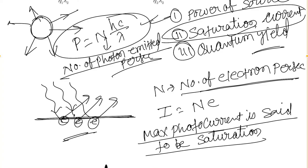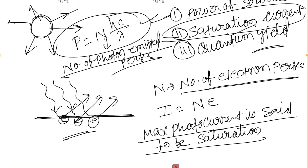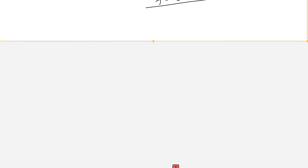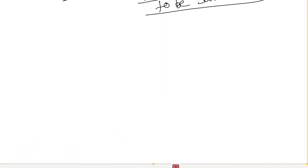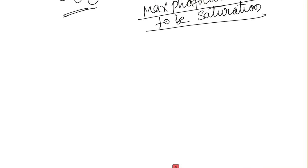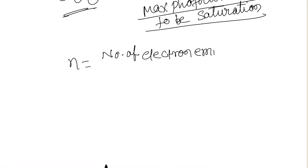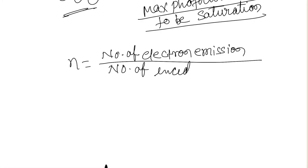This is the second term involved in the given question. The third term is quantum yield. What is quantum yield? It is the ratio of the number of electrons emitted to the number of incident photons. In other words, quantum yield = (number of emitted electrons) / (number of incident photons). This is the third concept involved in this question.